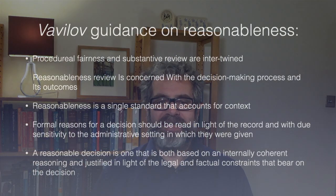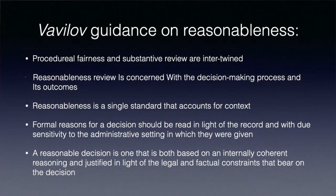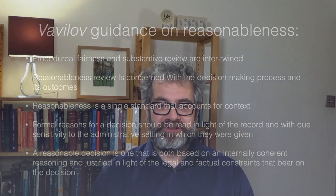First, the decision of the court clarifies the relationship between procedural fairness — particularly in relation to the giving of reasons — and substantive review. Second, the court says a court conducting a reasonableness review properly considers both the outcome of the decision and the reasoning process that led to the outcome. Third, the court emphasises that reasonableness is a single standard that accounts for context. Fourth, formal reasons for a decision should be read in the light of the record and with due sensitivity to the administrative setting in which they were given. And fifth, the court emphasises that a reasonable decision is one that is both based on internally coherent reasoning and justified in light of the legal and factual constraints that bear on the decision.